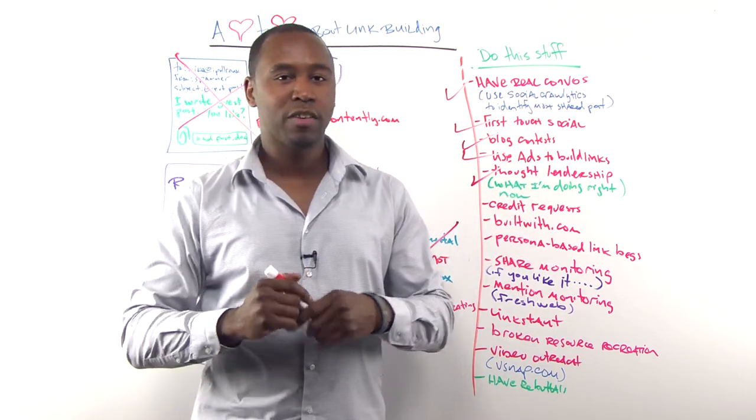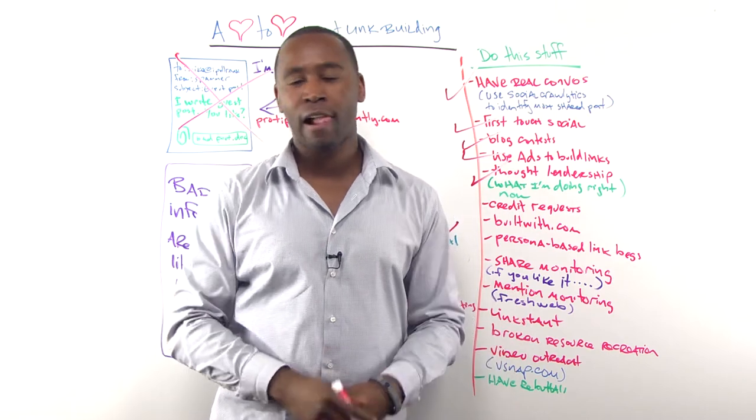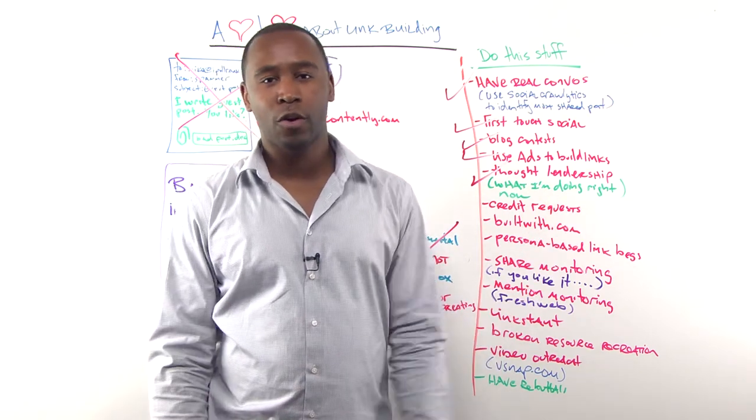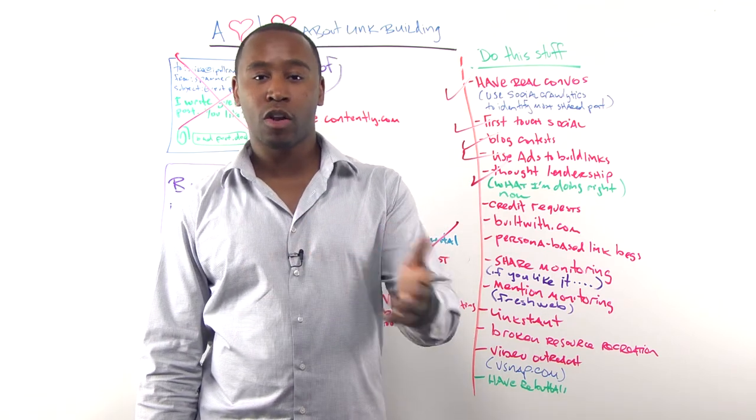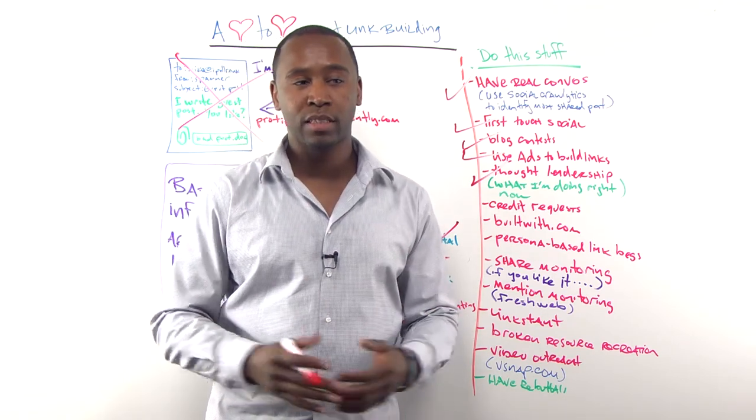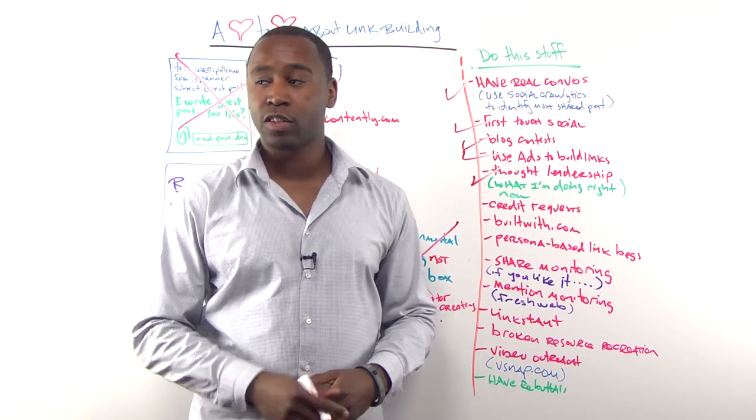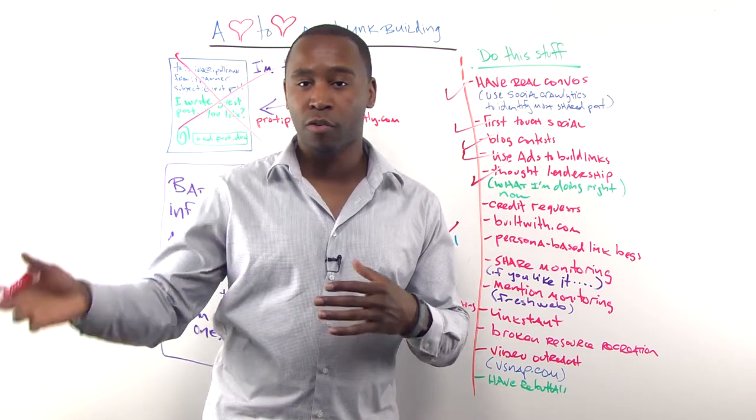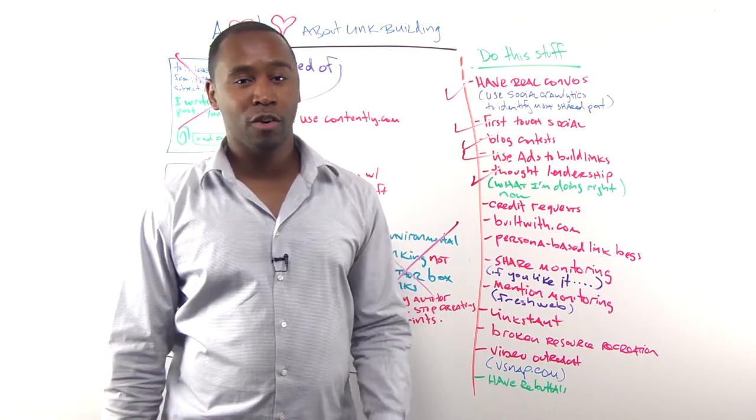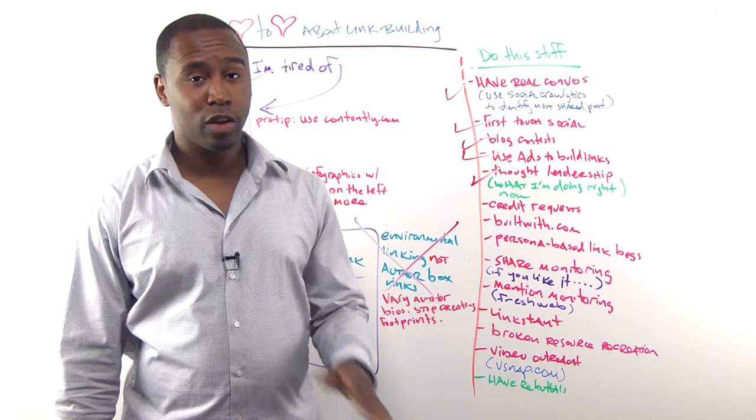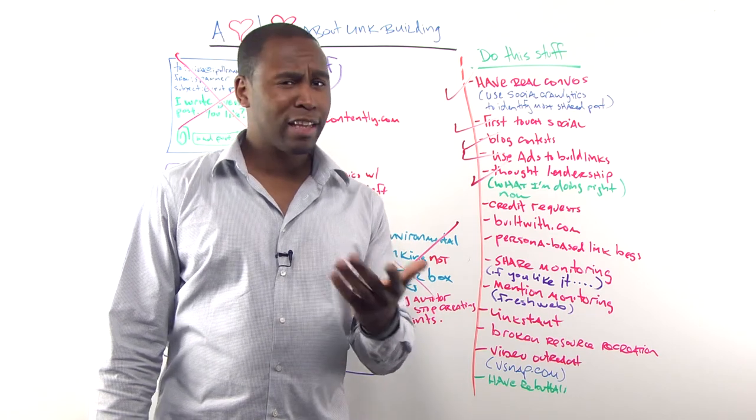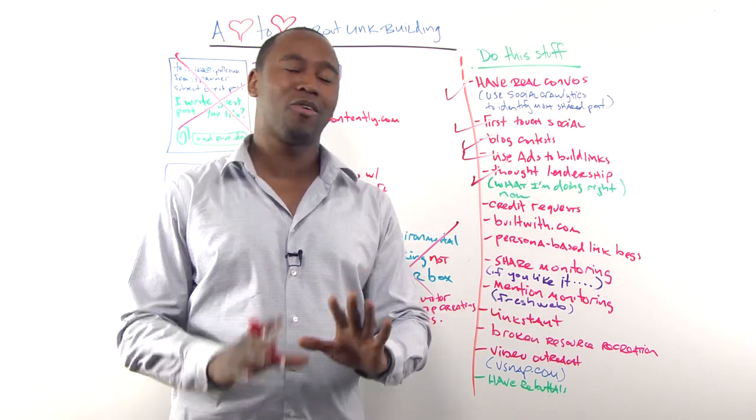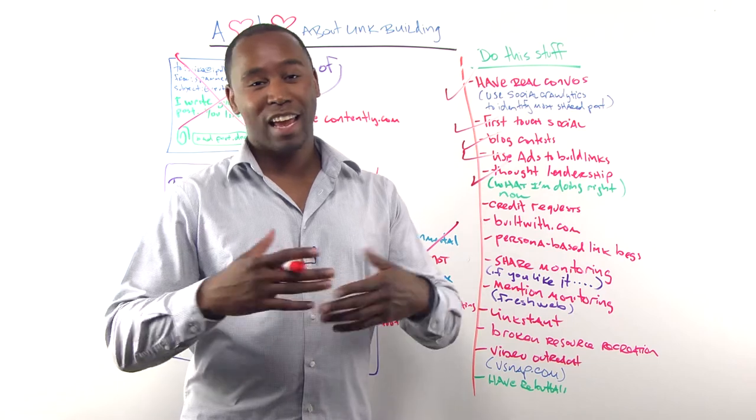Credit requests. So if you have a ton of high-res photos on your site, do a reverse image search and see who's stolen your photos. Ask for credit. Works really well. You can even also use this for your logo. If you're working with a pretty big business, throw their logo in a reverse image search. Tons of people are placing it all over the place. Ask for the credit or ask for the link. It works really well. It's easy. Some people actually also use the threatening legal action if they don't give credit. I don't go that far, but it works.